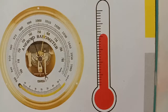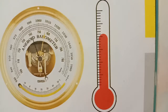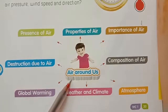Children, what is this picture? Do you know? It is an aneroid barometer. What are the weather instruments that can be used to measure the basic elements like temperature, humidity, precipitation, air pressure, wind speed and direction? Think, children. An aneroid barometer is one such instrument.